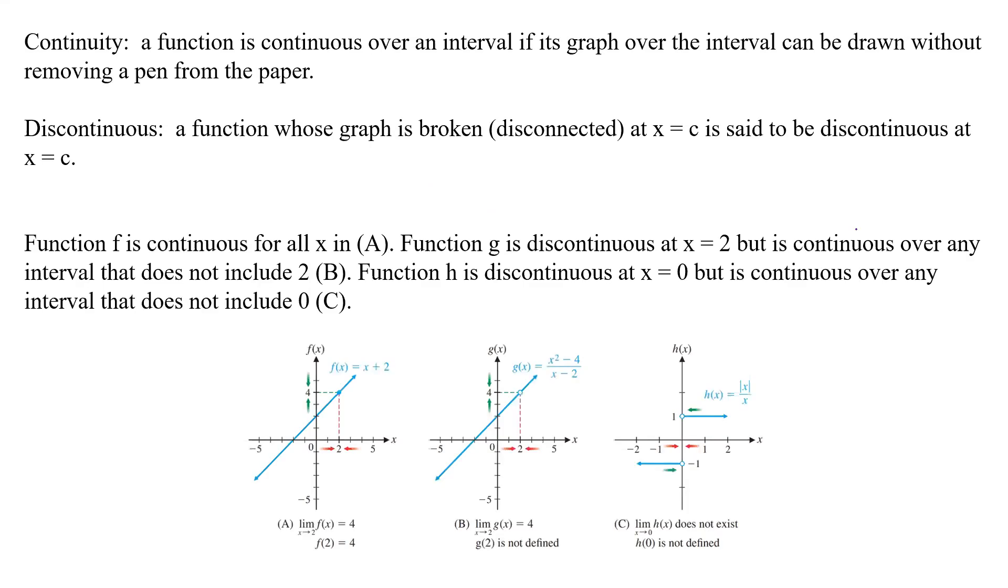So continuity, a function is continuous over an interval if its graph over the interval can be drawn without removing a pen from the paper. So basically, put your pen down, follow it, and if you can go the whole way from left to right without lifting your pen, it's continuous.